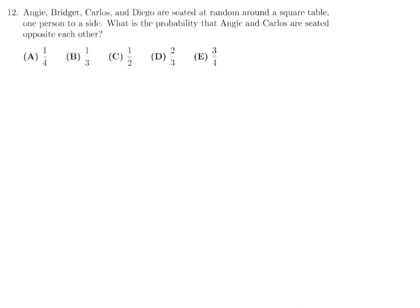One approach is to write out all 24 possible scenarios — four people give 4×3×2×1 = 24 total arrangements. 24 is not that many, but there is a quicker method.